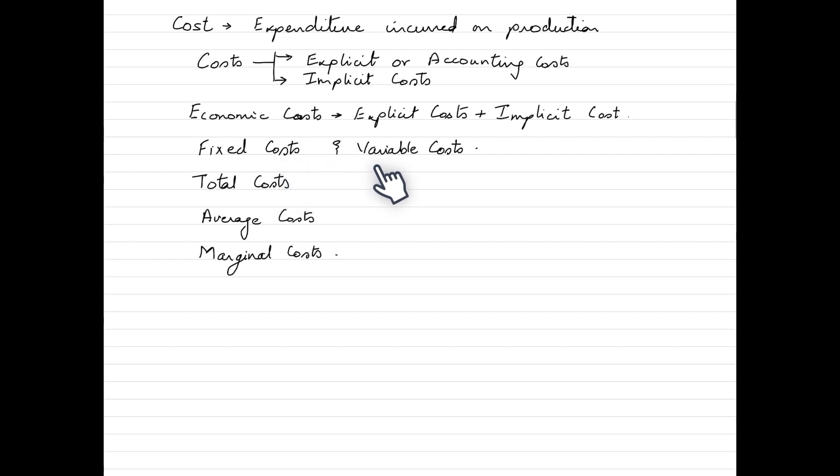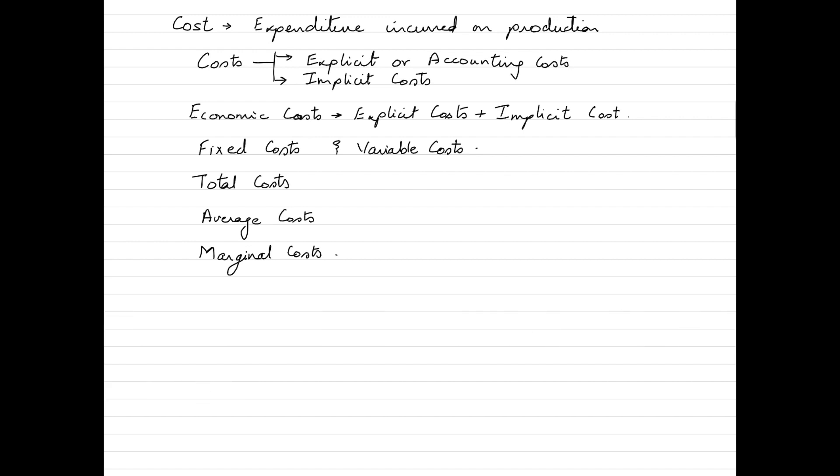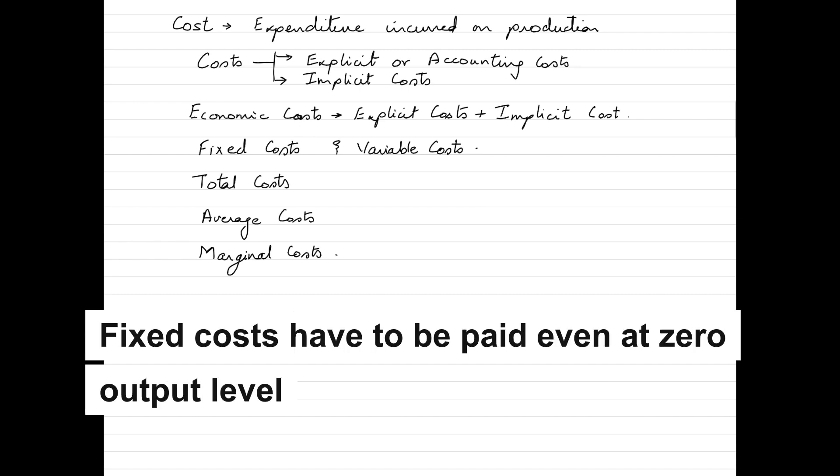The next category of cost is fixed costs and variable cost. As the name indicates, fixed costs are those costs which remain fixed throughout the level of output. They remain constant regardless of the quantity of goods and service produced. Examples of fixed costs could be rent that you would pay towards the property, salaries of the permanent staff, insurance premiums. These are all different types of fixed costs that the business will have to pay for even if there is zero level of production or zero output being produced.